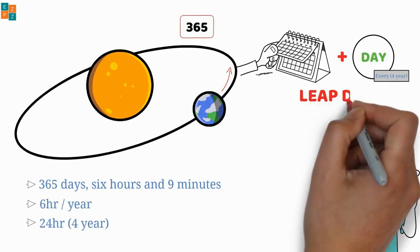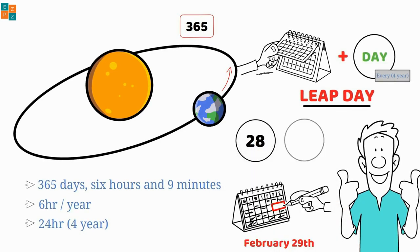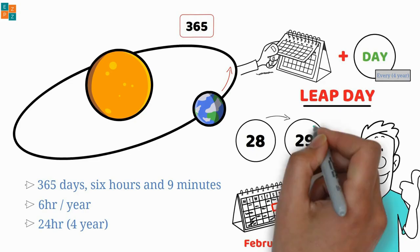This extra day is called a leap day and it happens on February 29th. So, instead of just 28 days in February in a leap year, we have 29.